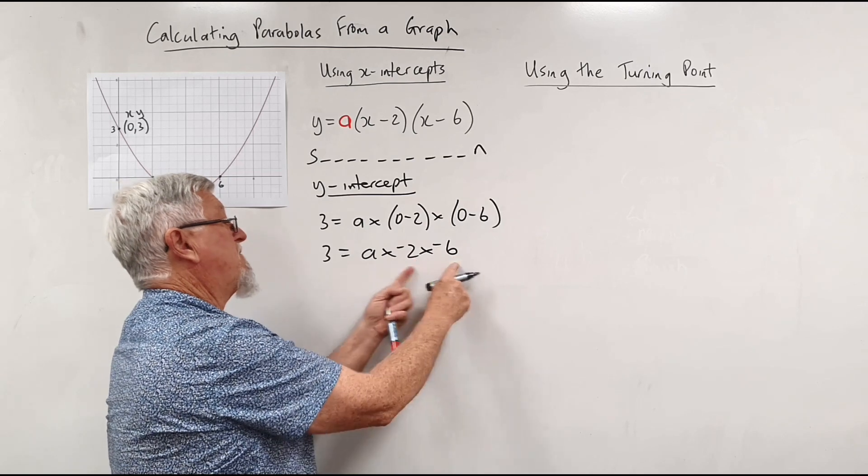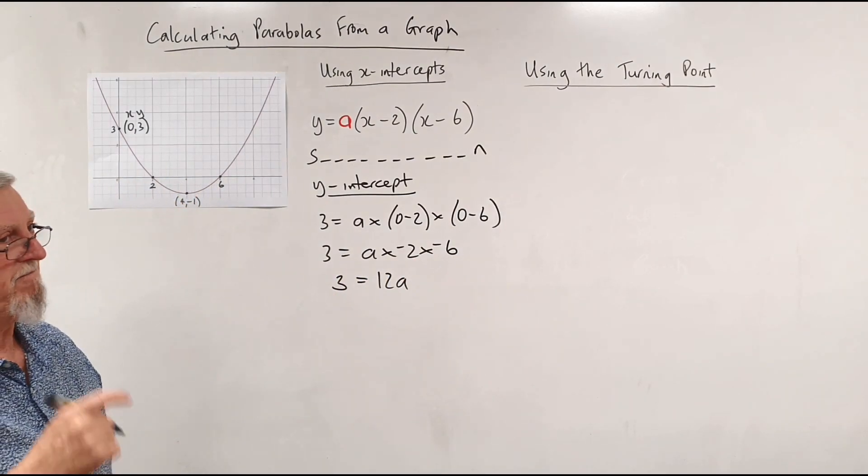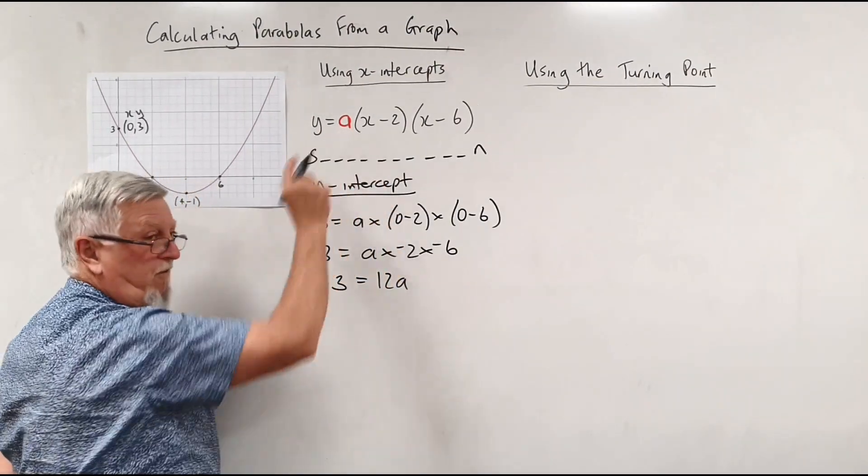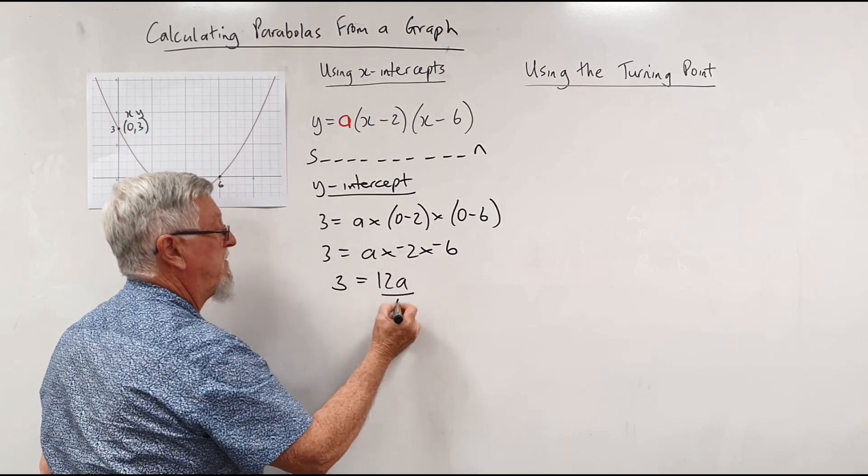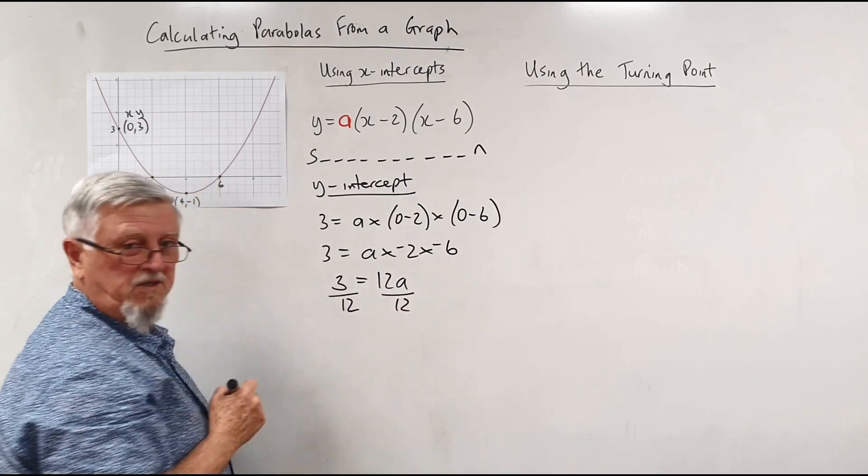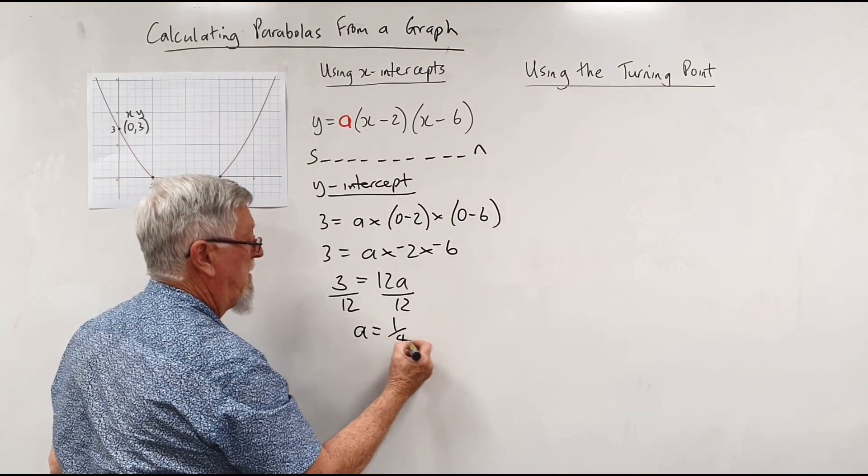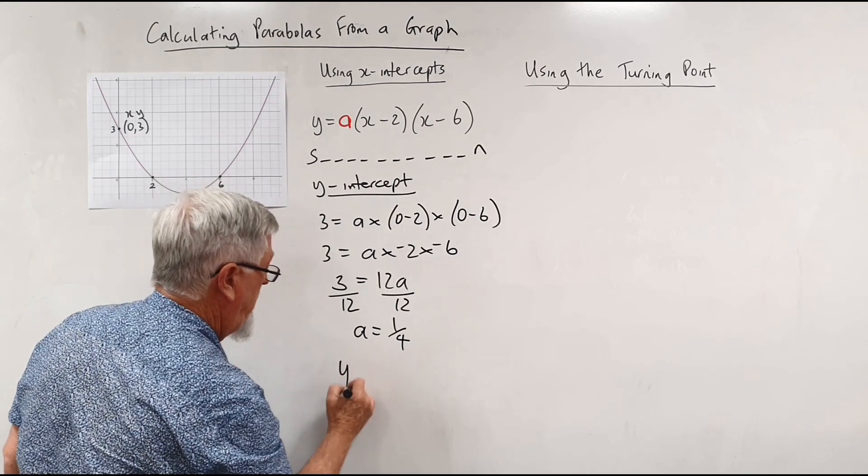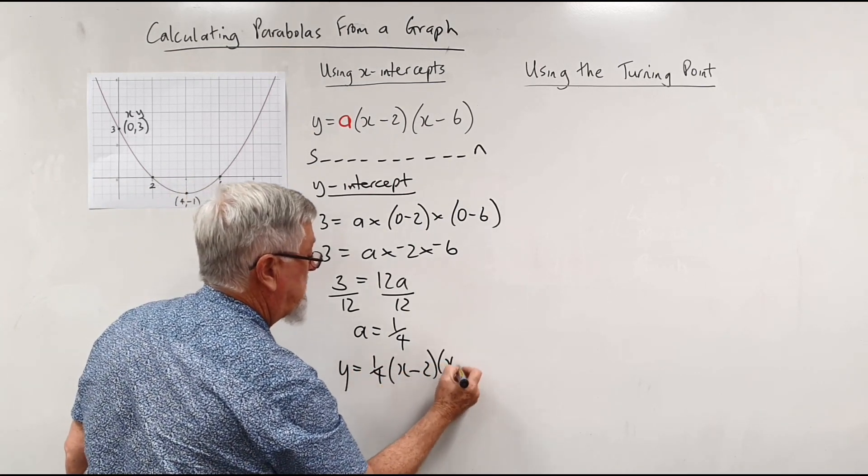So what have we got? We've got 3 equals a times minus 2 times minus 6, and those two negatives make a positive. So we've got 12. Actually, here we've got 12a equals 3, and people go silly things and go 3 and the 12 goes 4, and I'm writing the answer of 4, so watch out for that trap. If you divide by 12, you divide by 12, you're going to save the silly mistakes. You're left with 3 on 12, which is a quarter. So here's our actual equation of that parabola: y equals a quarter outside of (x minus 2)(x minus 6).